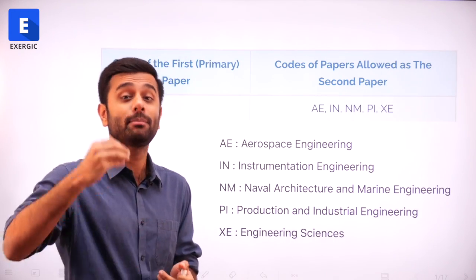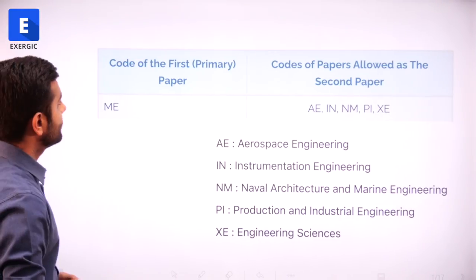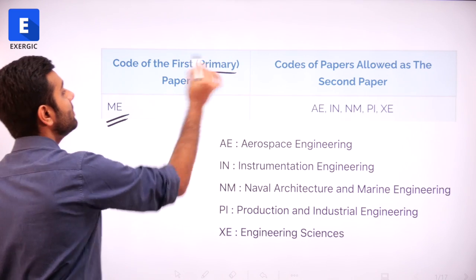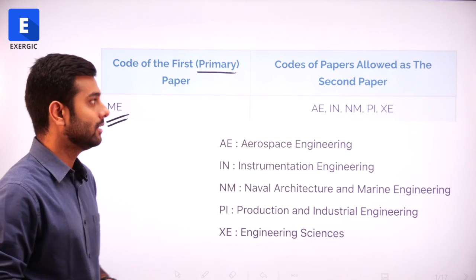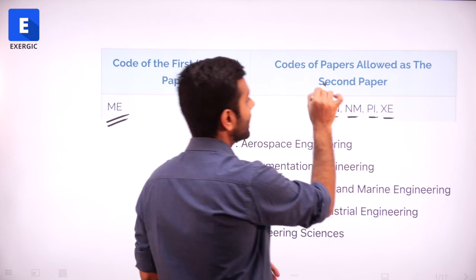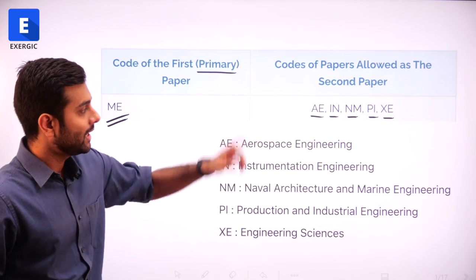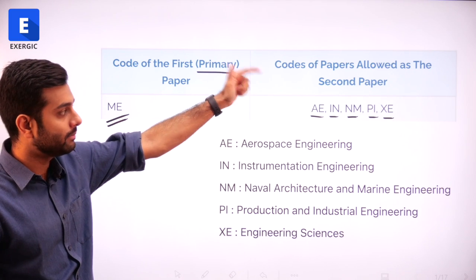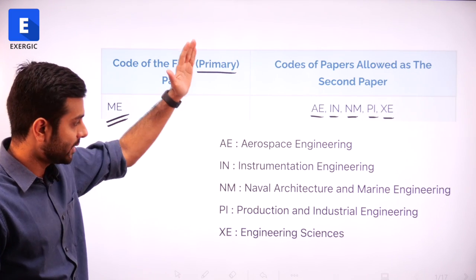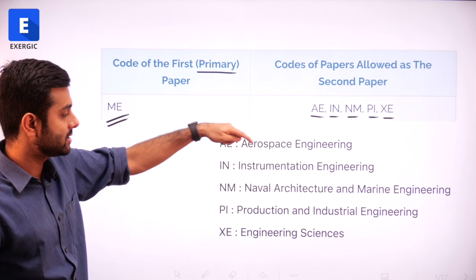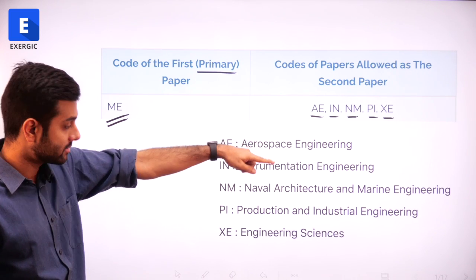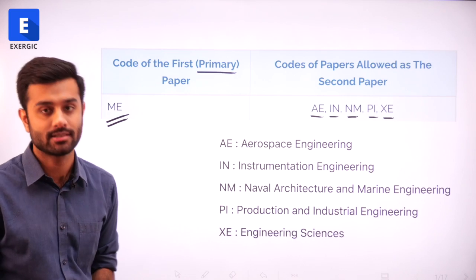Other than even PI, what are the good options? Those who are filling gate ME as their primary paper are eligible to write these 5 papers as their secondary or second paper: AE, IN, NM, PI, XE — Aerospace Engineering, Instrumentation Engineering, Naval Architecture and Marine Engineering, Production and Industrial Engineering, and Engineering Sciences.